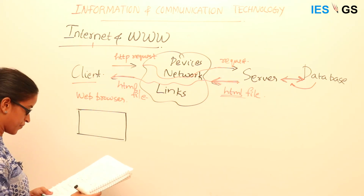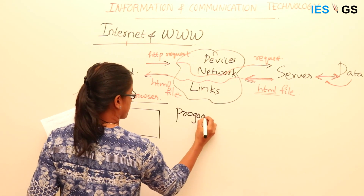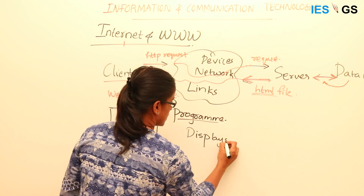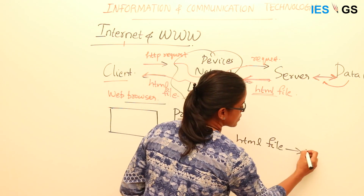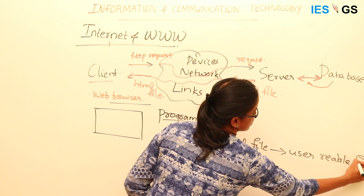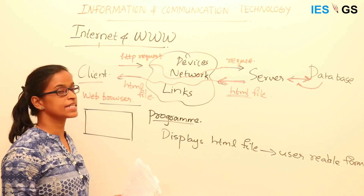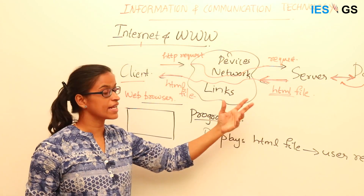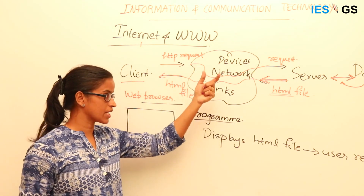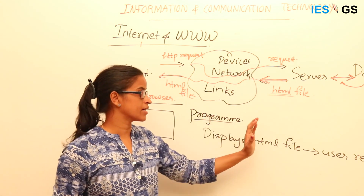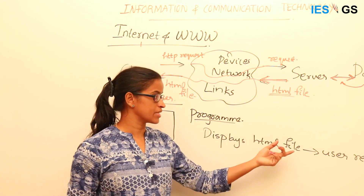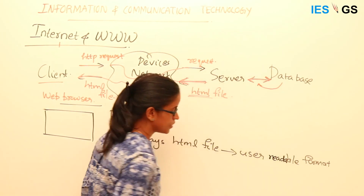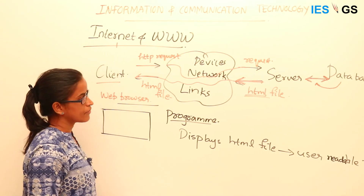What are the functions of this web browser? A web browser is also a program. Its main function is to display an HTML file in a user-readable format. HTML is both machine-readable and human-readable, but without the browser it would not be formatted or displayed beautifully — fonts would be the same and there would be no classifications like headings. Using the tags in the HTML file, the browser displays it in a proper, user-readable format.